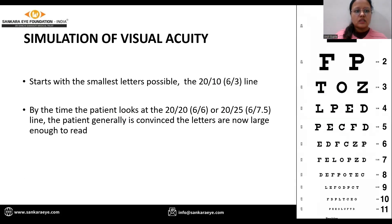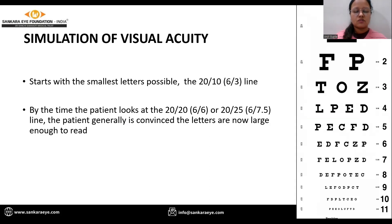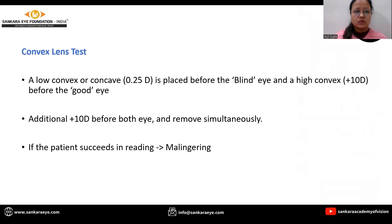Simulation of visual acuity: we start from the smallest letter possible in the chart, which is the 6/3 line. By the time the patient looks up at the 6/6 or 6/7.5 line, the patient is generally convinced that the letters are now large enough to read and is easily able to read them.